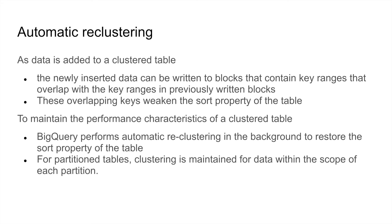Let's look at automatic clustering by BigQuery, which is a very important feature. As data is added to a clustered table, newly inserted data is written into different blocks which may not overlap with your clustering strategy. These overlapping key ranges generally weaken the sort property of the table and can increase query time. To maintain performance, BigQuery performs auto-reclustering in the background, so you don't notice it and it does not impact your query performance. For partitioned tables, clustering is maintained within the scope of each partition. Importantly, auto-reclustering does not cost the end user anything.